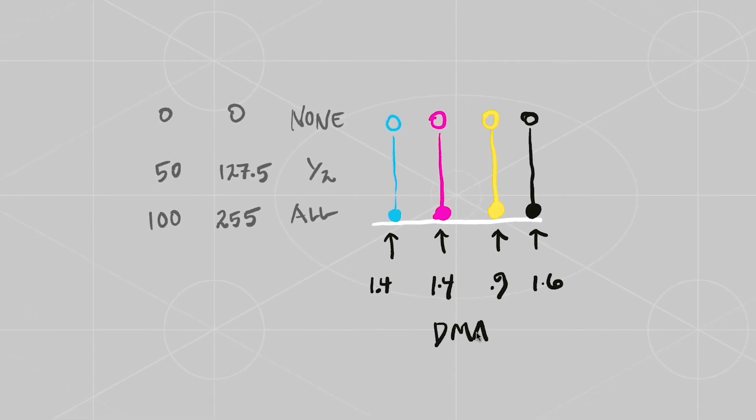Now we realize that 100% equals 255 equals 1.4 on the cyan, 0.9 on the yellow, 1.6 on the black.